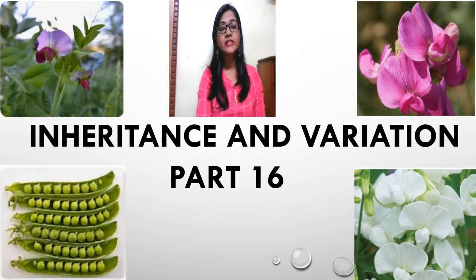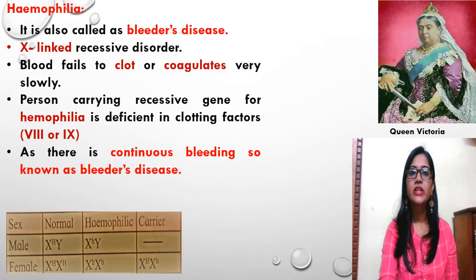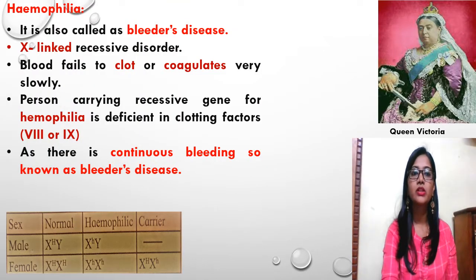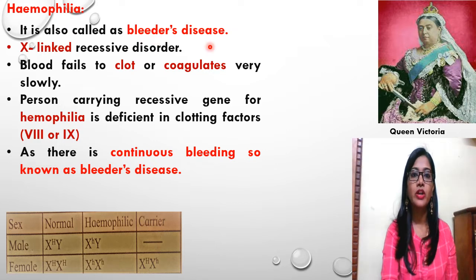Hello students, this is Inheritance and Variation Part 16. In this slide, we are going to talk about another excellent recessive disorder known as Haemophilia. Haemophilia is also called Bleeder's Disease.